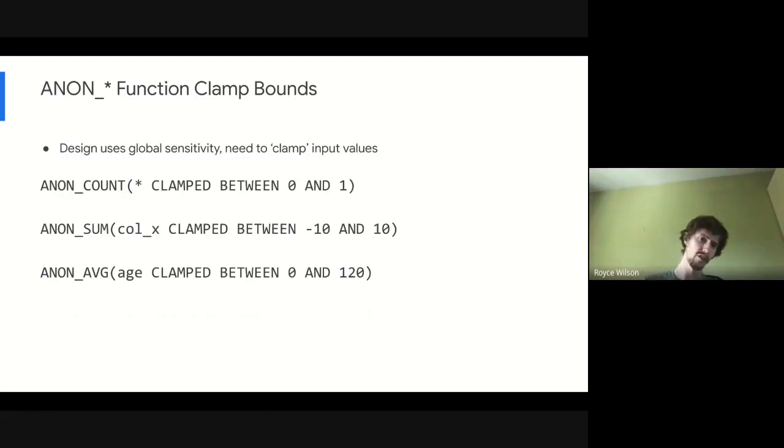Looking closer at these anonymization functions that I was talking about, we provide a full suite of statistical aggregation functions. In addition to the ones shown here, we also have standard deviation and variance, max and min, median, percentile. Really kind of the full suite and everything that you would expect in a SQL aggregate function library. All of these examples here have these contribution bounds in the clamped between syntax.